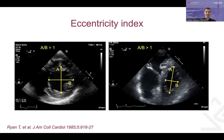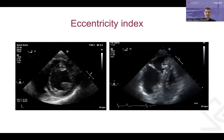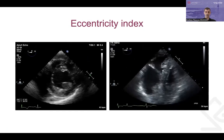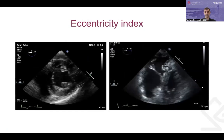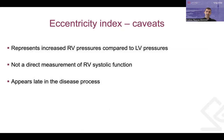The eccentricity index is a quick, simple method using the transgastric short axis view. The left ventricle should look circular; if it looks oval or D-shaped, that suggests RV overload — either pressure or volume or both. The downside is that it only represents an increase in RV pressures relative to the left and doesn't directly assess RV systolic function. It also generally occurs late in the disease process when the RV is already on a downhill slope.